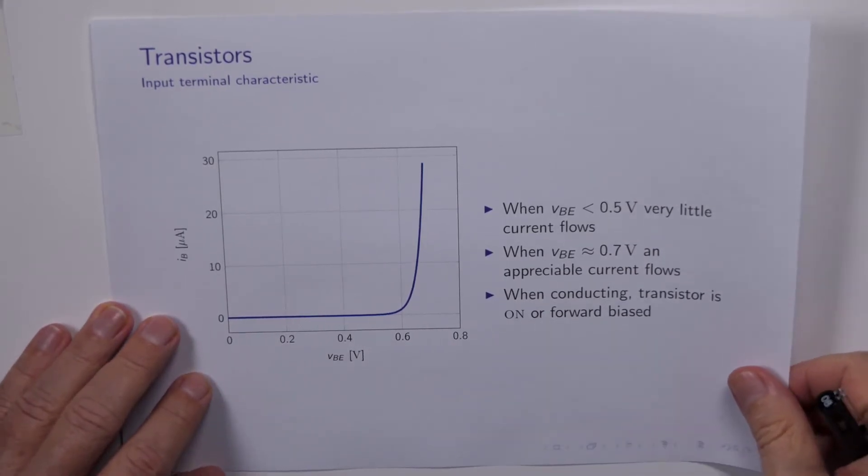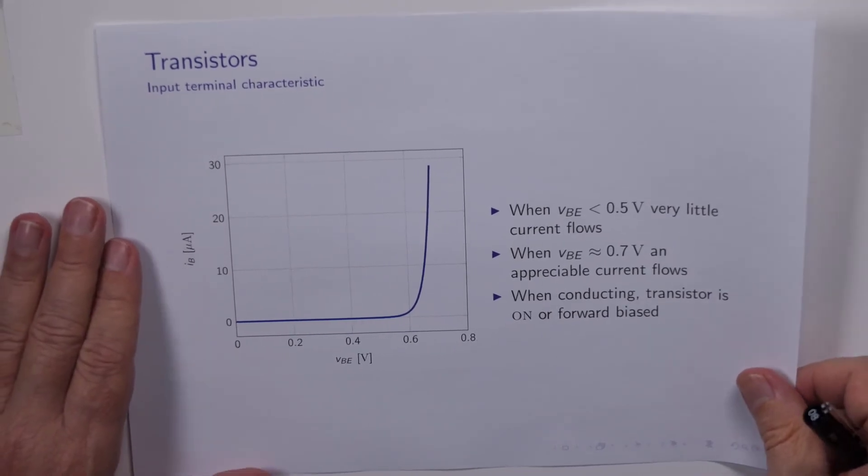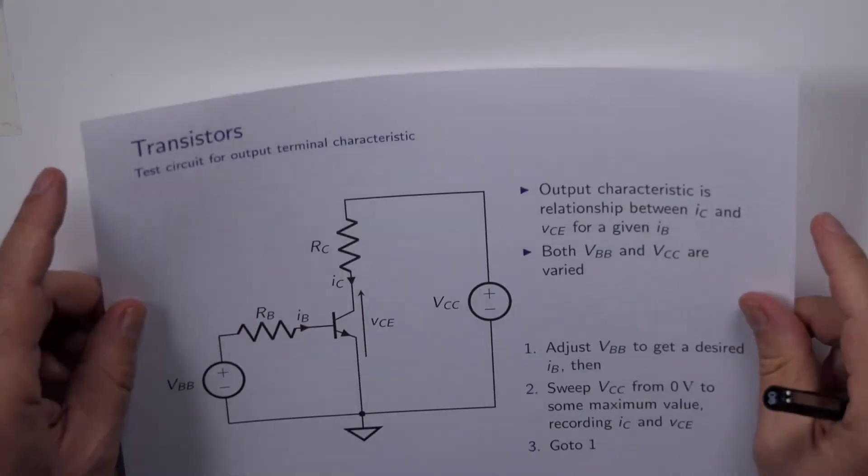All right, that's the input terminal characteristic. Fortunately, there's only one other characteristic that we need to look at, and that's concerned with the output. So we need a new test circuit now.